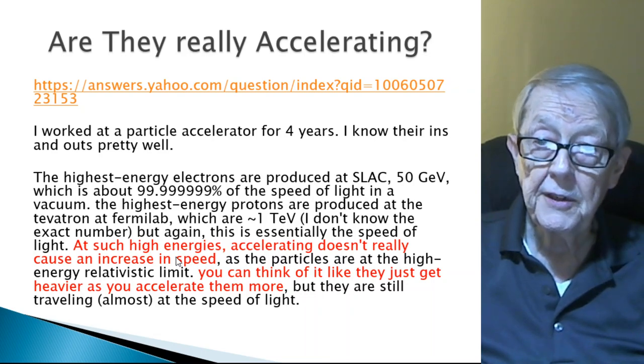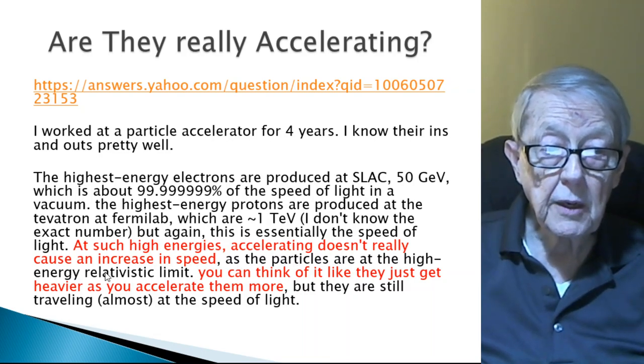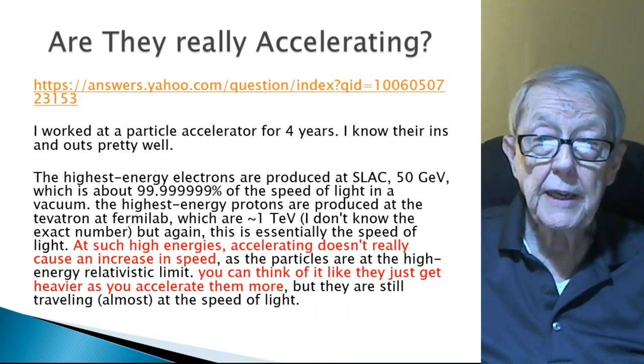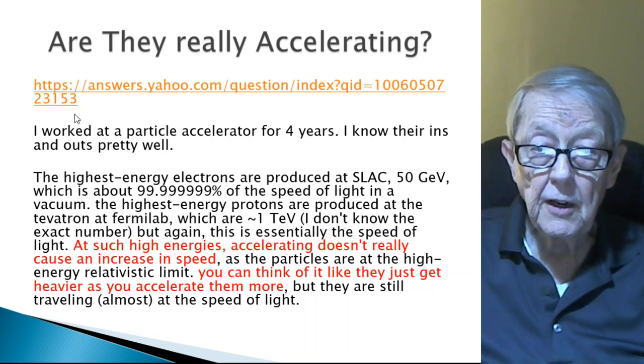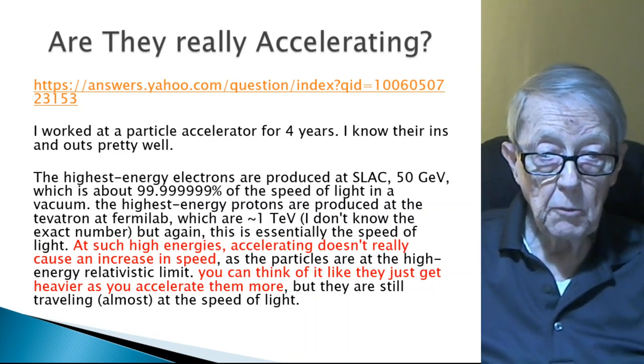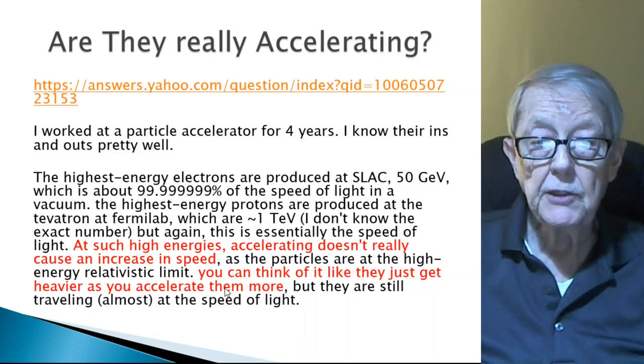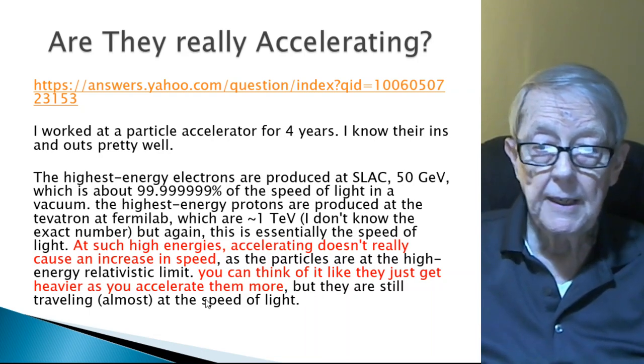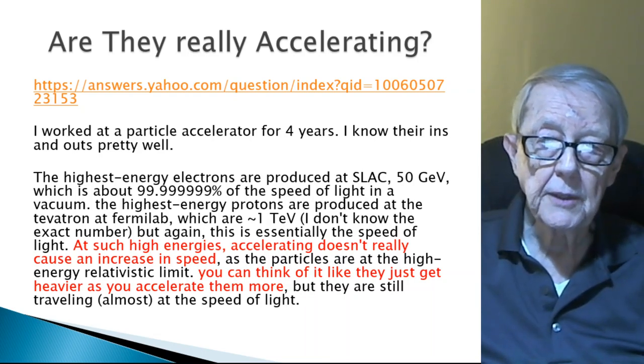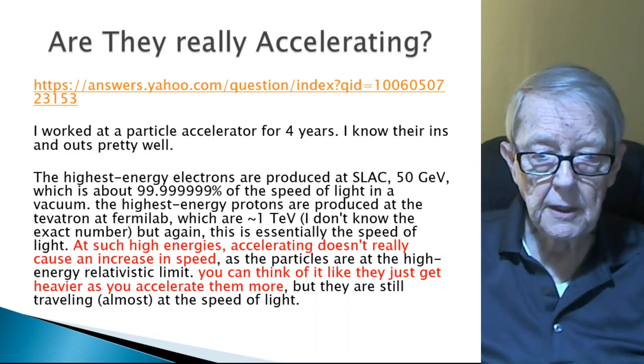I'm not sure this guy realized the contradictions he's making here, but his reason is as the particles are at high energy, at the high energy relativistic limit. I'm interpreting his statement as meaning when the particle is initially accelerated, it is under the force of 50 giga electron volts and therefore is already moving at speed c. But instead of accelerating the particle, you can think of it that they just get heavier as you accelerate them, but they are still traveling almost at the speed of light.